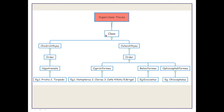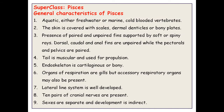The general characteristics of Superclass Pisces: fishes are aquatic, either freshwater or marine. They are cold-blooded vertebrates whose body temperature changes with environmental temperature. The skin is covered with scales, dermal denticles, or bony plates.